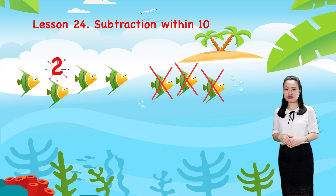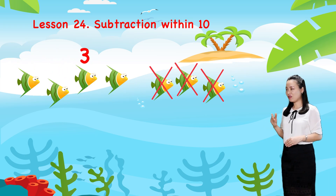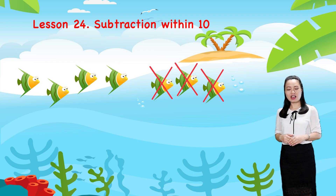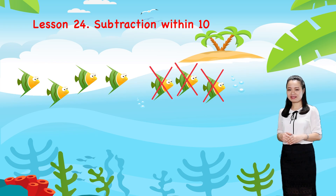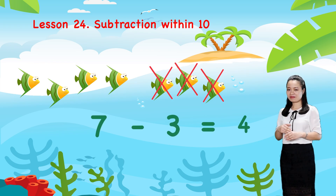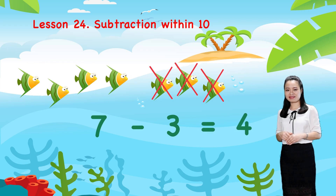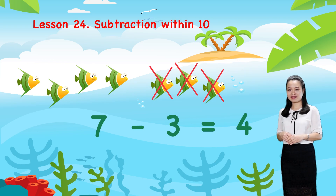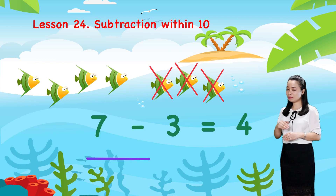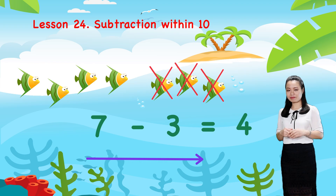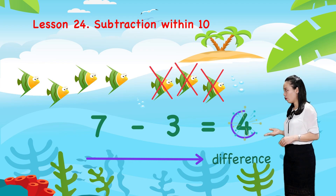One, two, three, four. So, four fish are left. We write in numerals. We say, seven minus three equals four. The result of subtraction is called the difference. Here, four is the difference.